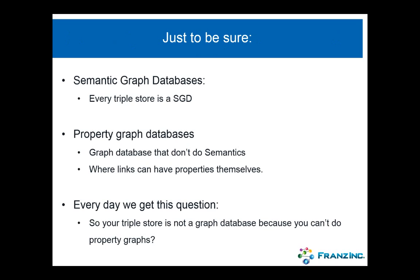Every triple store on the planet is a semantic graph database. Property graph databases are the graph databases that don't really do semantics — they might be able to read in some triples, but they're not really focused on the semantic part.